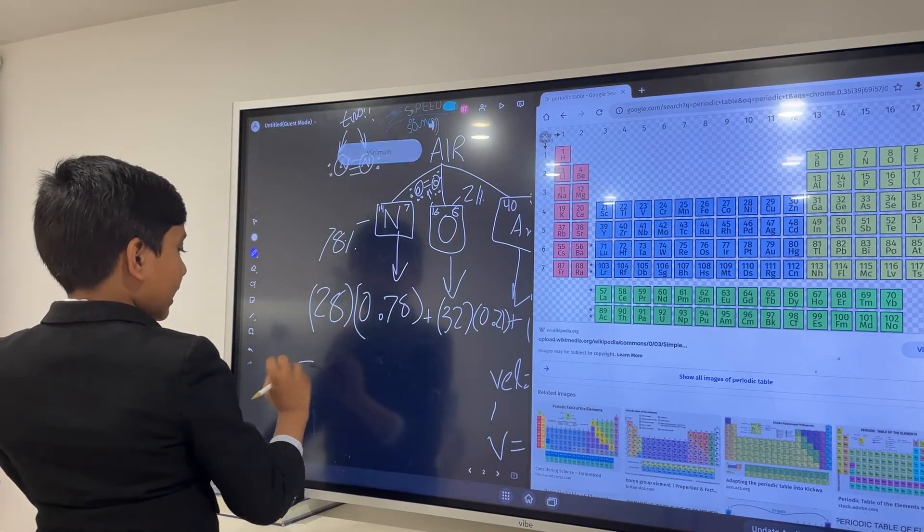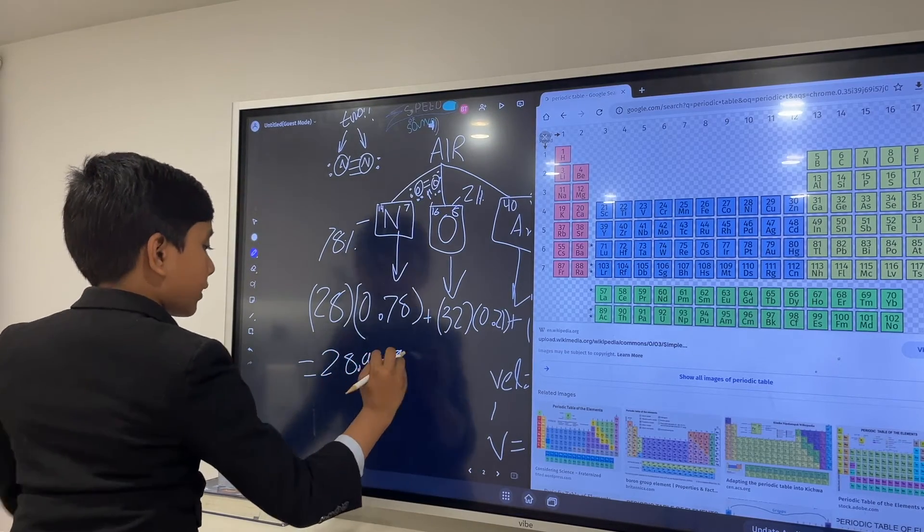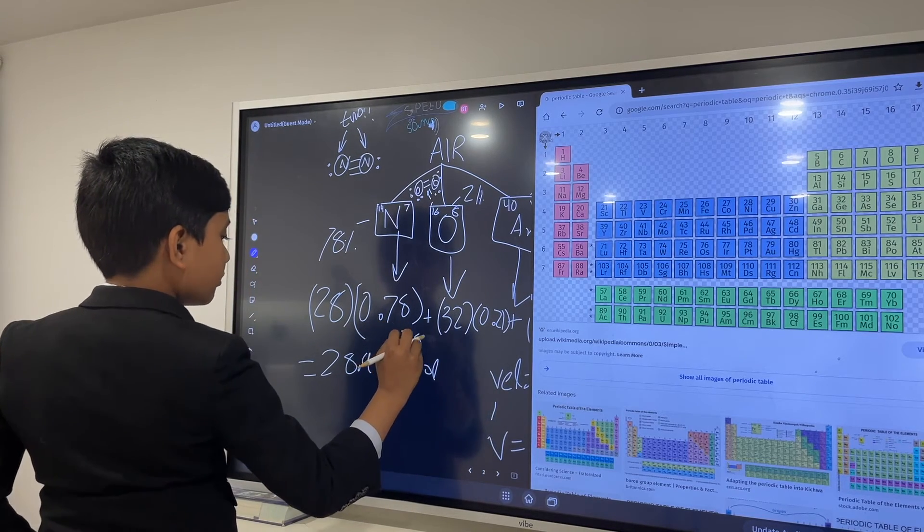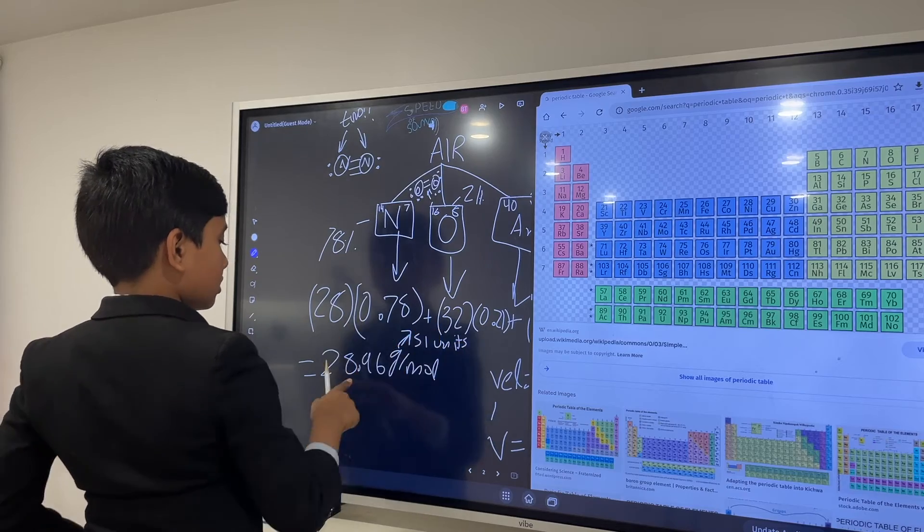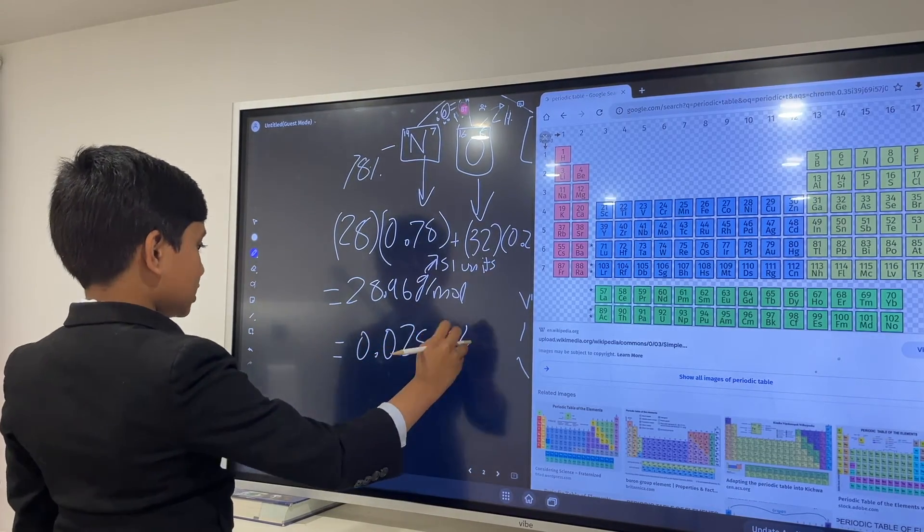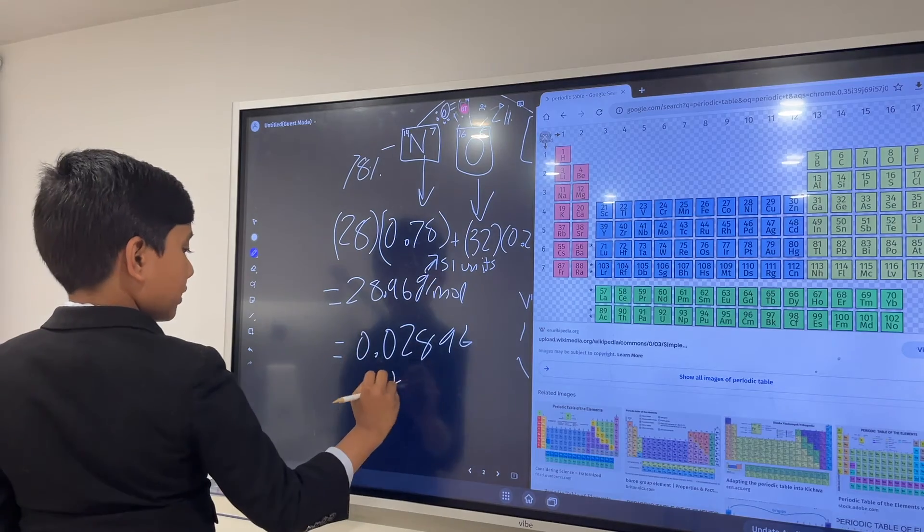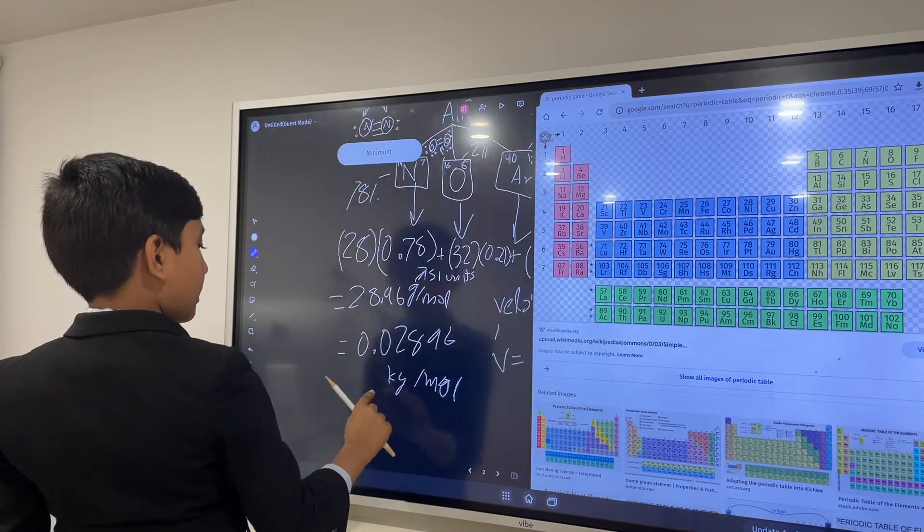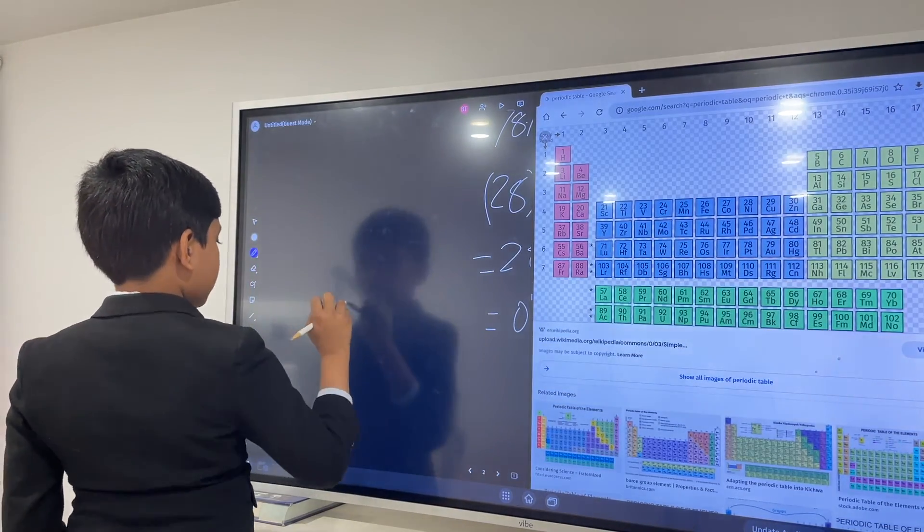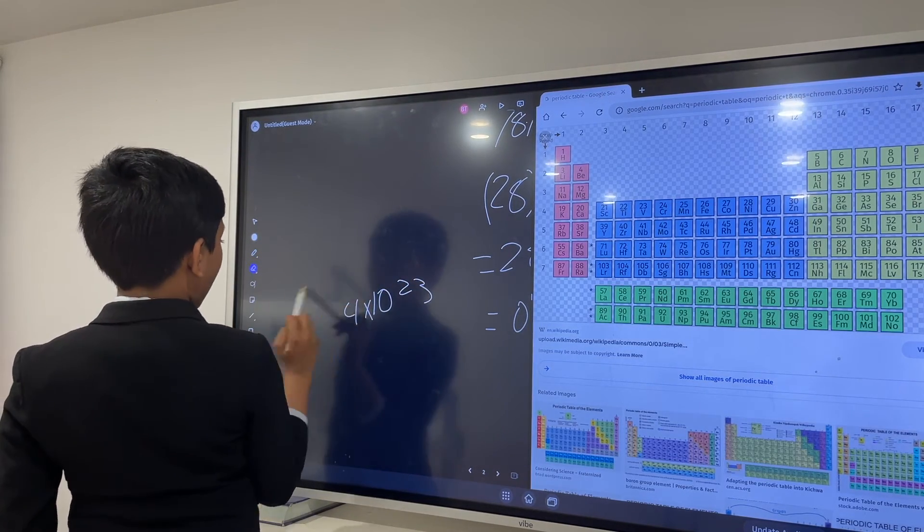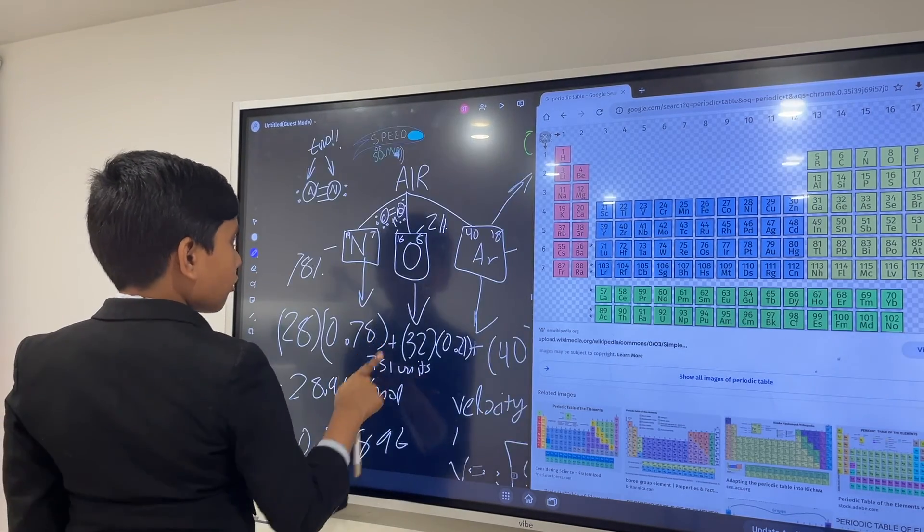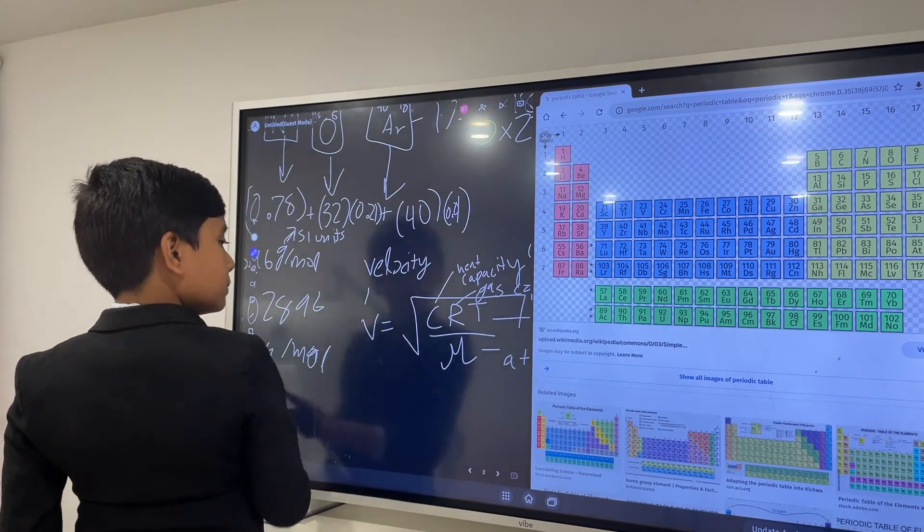And now adding that up gives us 28.96 grams per mole. But grams is not the required unit, which is why we will have to change. So we have to divide by a thousand, which gives us 0.02896 kilograms per mole. By the way, if you didn't know, search up what a mole is. It's somewhere around 4 times 10 to the 23, if I remember Avogadro's number correctly.